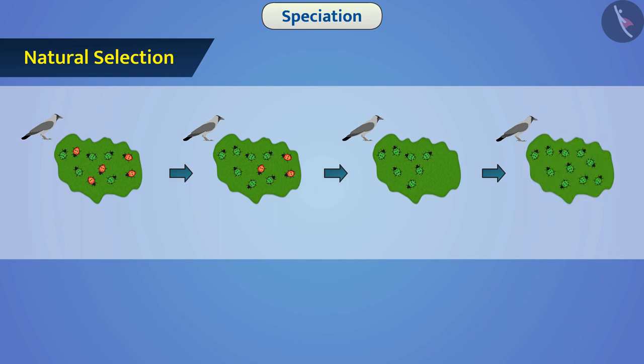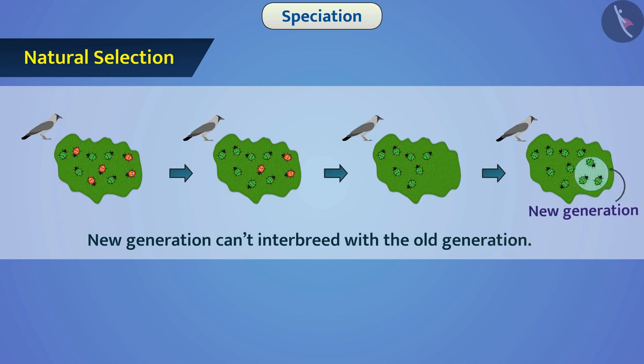Sometimes, the new generation becomes so different that it can't interbreed with the old generation. So we say that a new species has emerged. That is, speciation has happened.